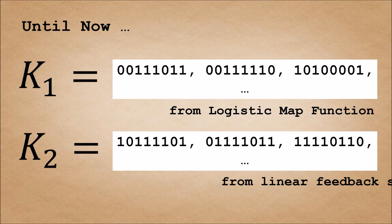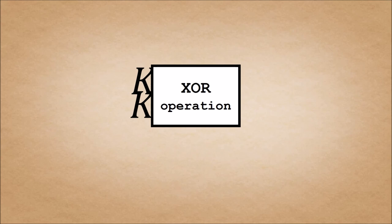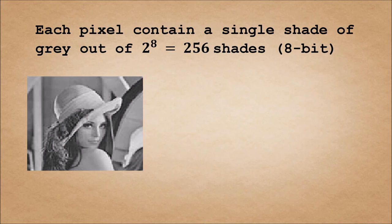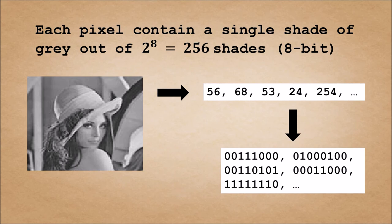Now we have two sequences: k1 from the logistic map function and k2 from the linear feedback shift register. Sequences k1 and k2 are XORed together in a bitwise manner to form our key. We will convert each pixel of the image to a number according to the shade between 0 to 255. Then we convert this number into 8-bit binary. We call this sequence p.